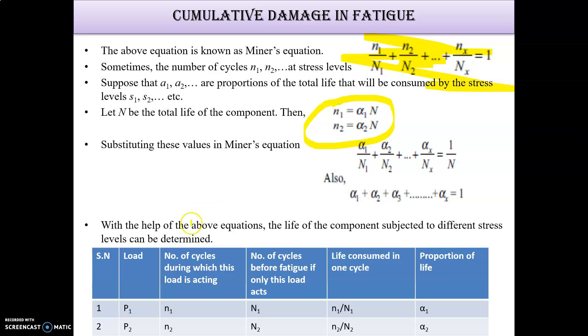You can make a table like this which will help you understand. The columns are: load during which the load is acting, number of cycles, number of cycles before fatigue life, life consumed in one cycle, and proportion of life (alpha). Based on this you can calculate.